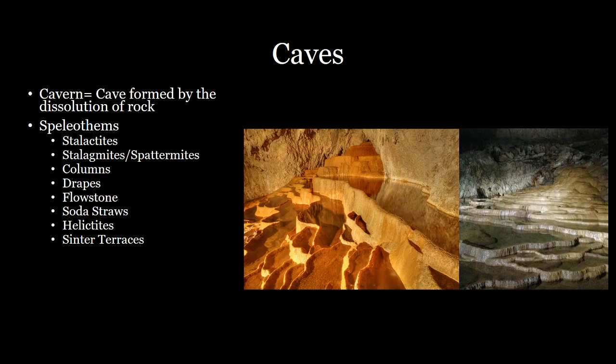Next we have cave terraces. Sometimes when water flows down through a cave it can form into a pond or puddle, and calcite deposits on the edge of that puddle forming a terrace feature. The walls of that puddle build up as more limestone gets deposited until there's enough water to flow over, creating multiple terraces as calcite forms these more mature puddle formations.